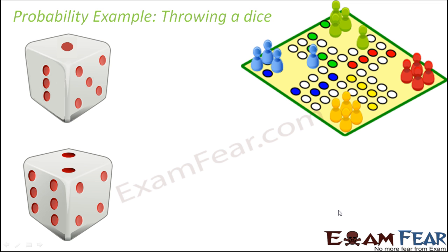So, how does a dice look like? This is how a dice looks like. It has 6 sides and on the 6 sides you have these dots which indicate 1, 2, 3, 4, 5 and 6. So, every time you throw the dice, it shows one particular side — basically it shows one particular number.